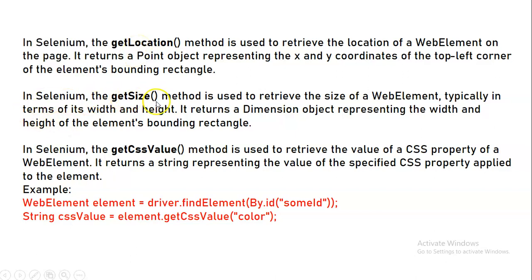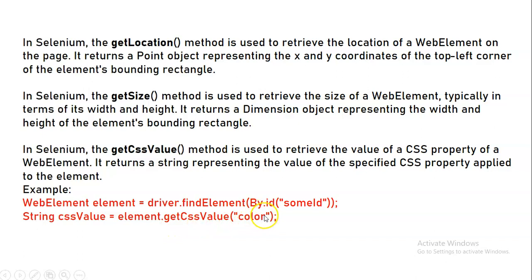We have the get_size method, which is used to retrieve the size of the web element in terms of its width and height. It returns a Dimension object representing the width and height of the element's bounding rectangle. Then we have get_css_value, which is used to retrieve the value of a CSS property of a web element. It returns a string representing the value of the specified CSS property — for example, the color applied to that element.